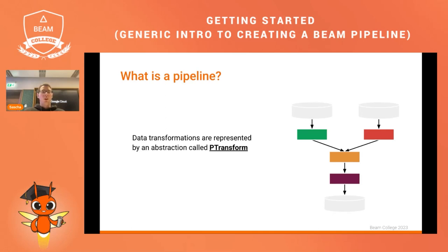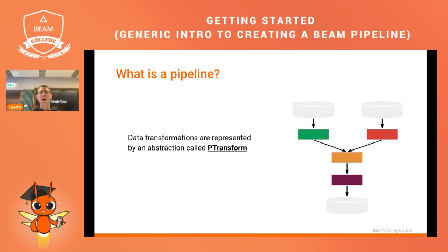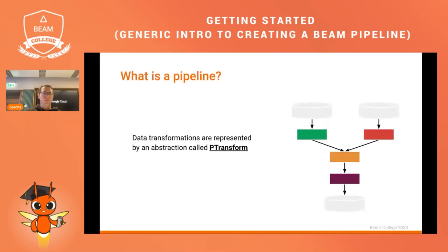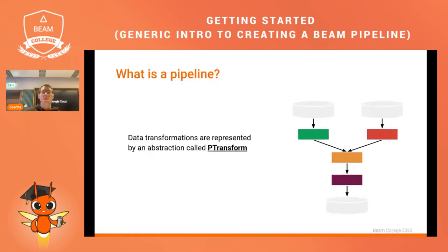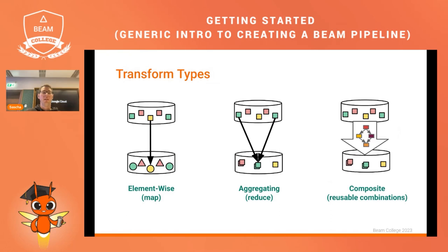When it comes to transformations within a data processing pipeline — manipulating or aggregating data — we talk about an abstraction called PTransforms. Several types of transformations are offered within Beam. Today we will focus on three of them: element-wise transforms, aggregation transforms, and composite transforms.